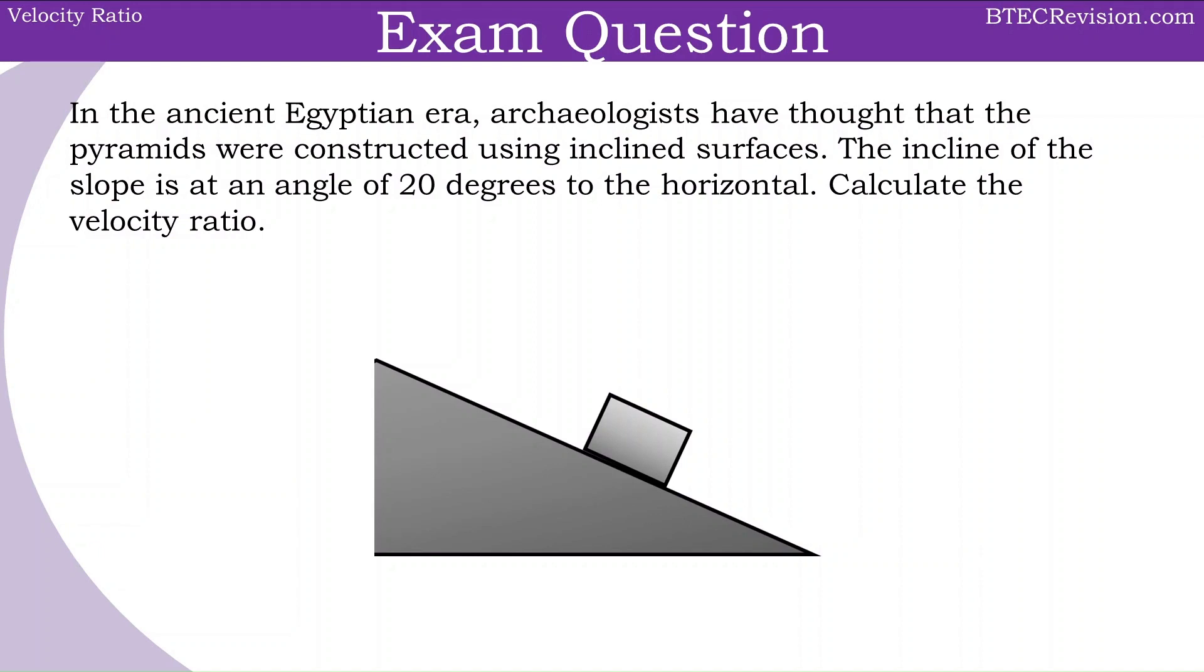We can start by thinking about what the effort distance and the load distance are. If we go along the slope, we can say this is the effort distance, so we can label that as SE. The reason it's the effort distance is because we are pushing along it. The effort is along the slope. The load distance is vertical because that's the distance the load needs to move. It is at the top, so we can label that SL.